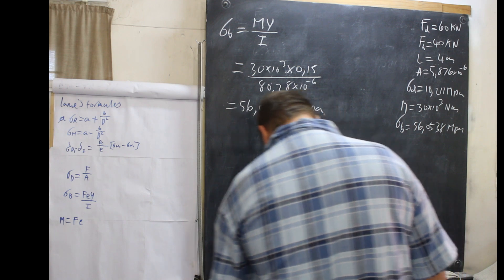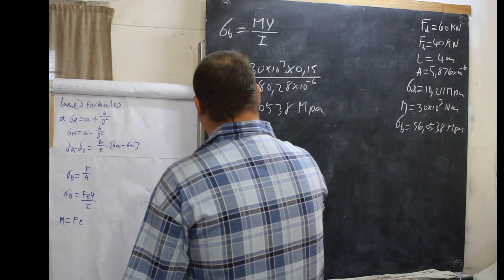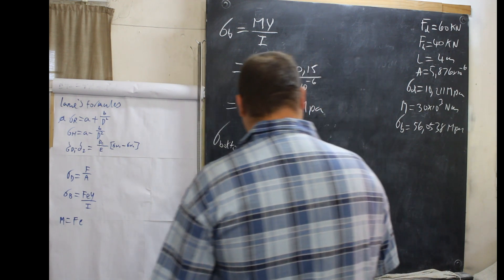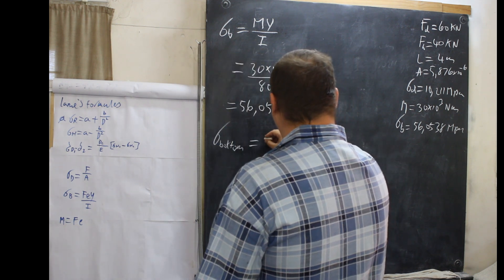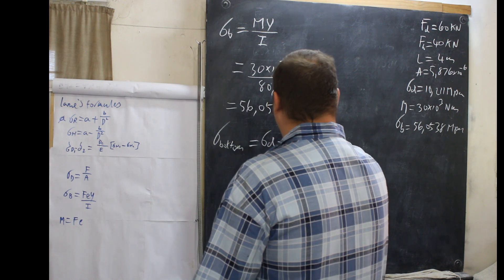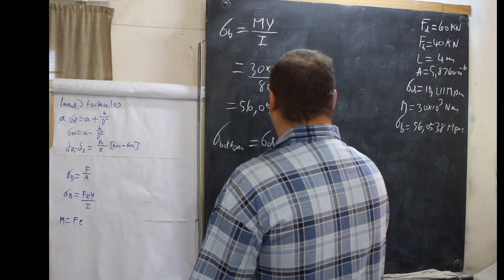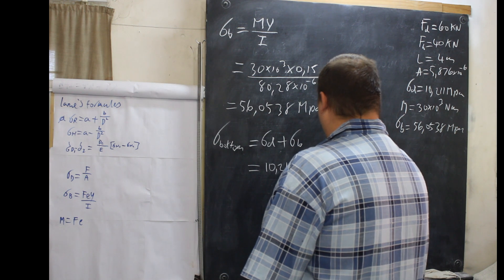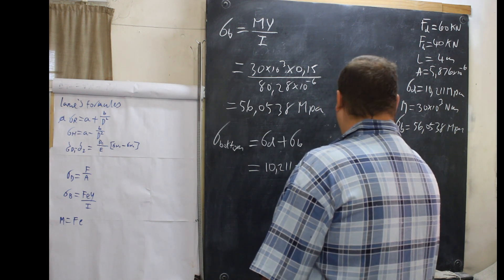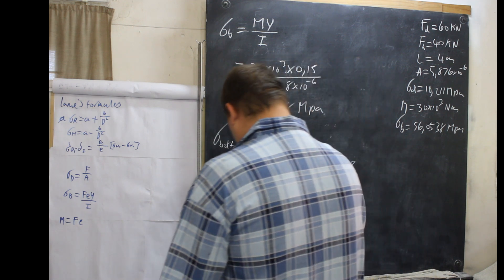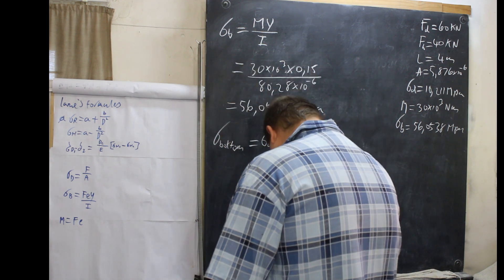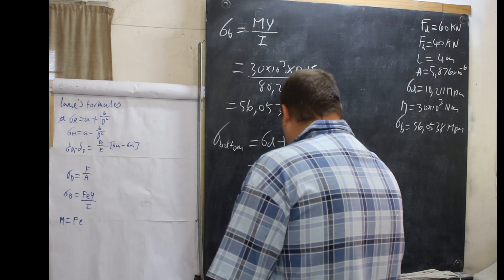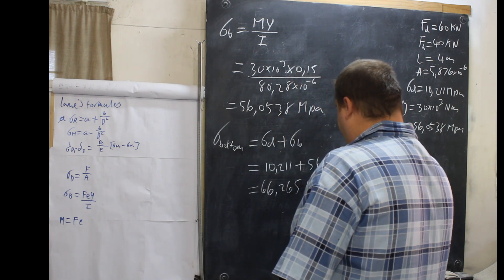Now we calculate the resultant stress at the bottom of the beam. The stress at the bottom equals σD plus σB, which is 10.211 plus 56.0538, giving 66.265 megapascals. This is tensile.